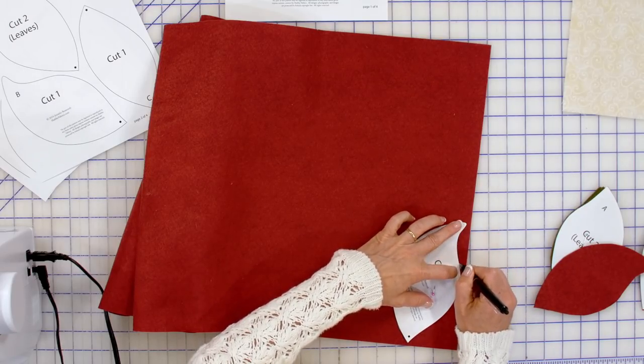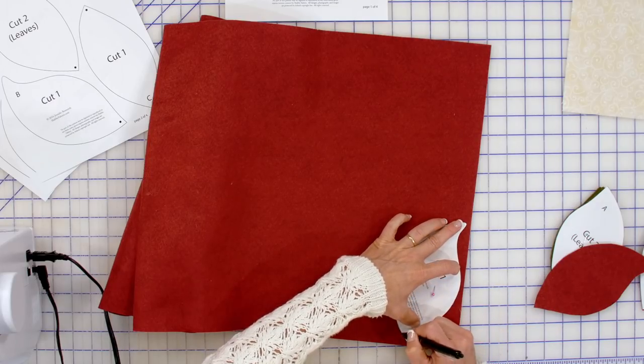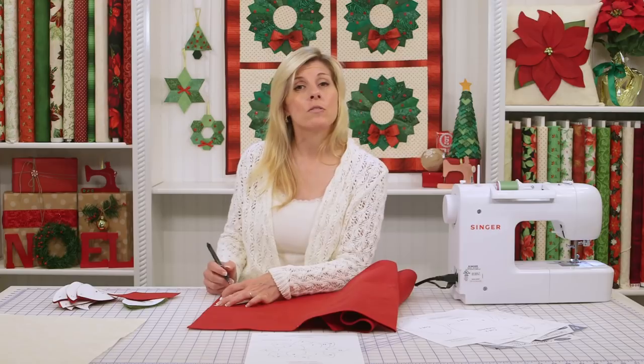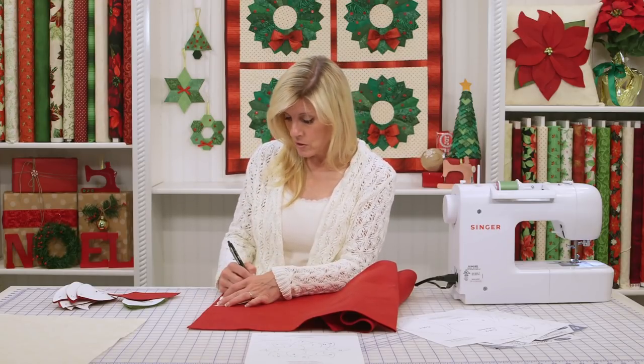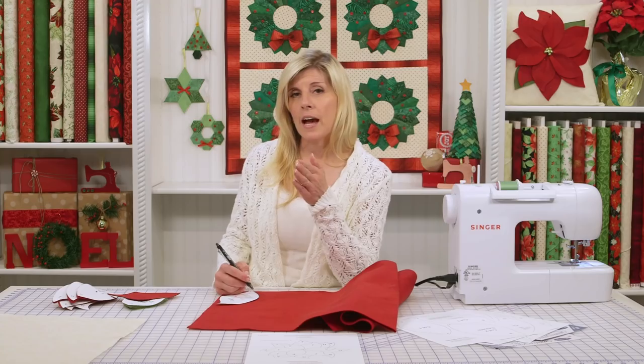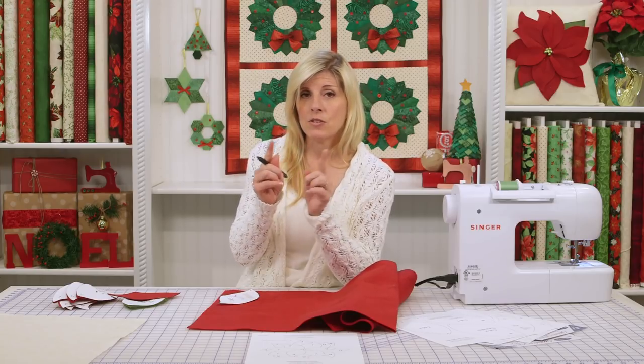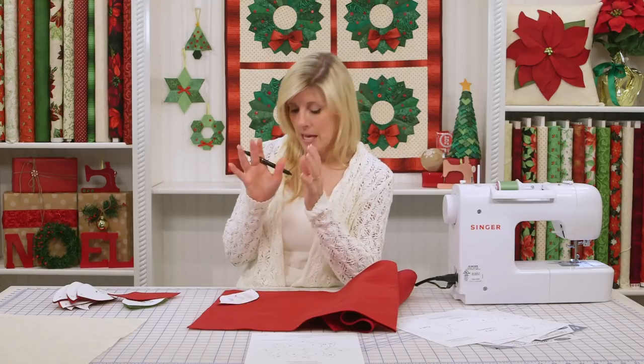Just know that if you do use the friction pen on a darker fabric, this included, when you try to iron it away, it will leave a little bit of a hazy line. So if you're going to trace this on with the friction pen, just cut out just inside of that line so that black edge is not showing because even when you iron it away, it'll be kind of like a milky haze.